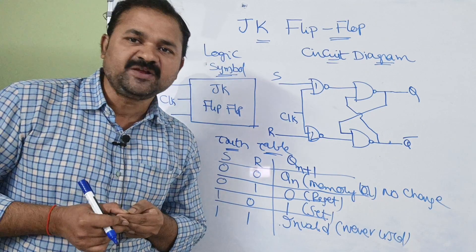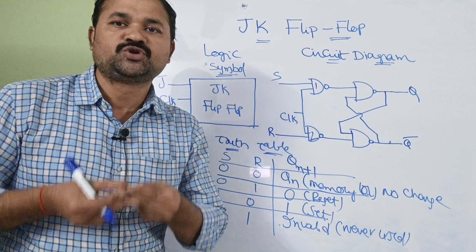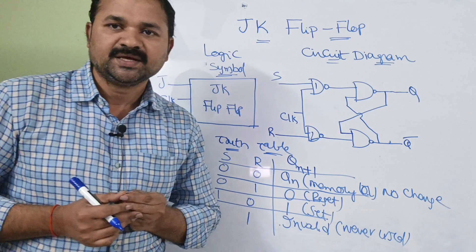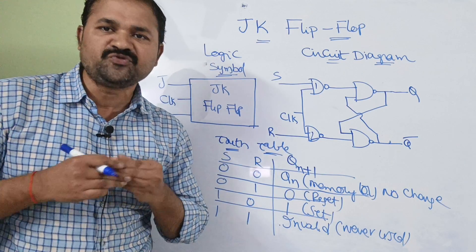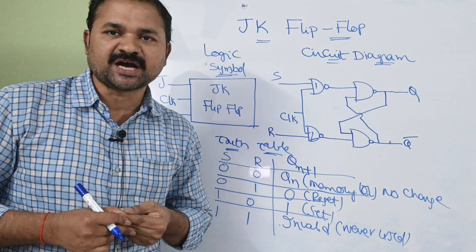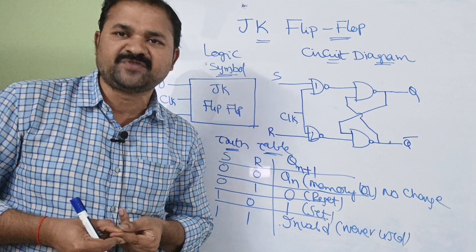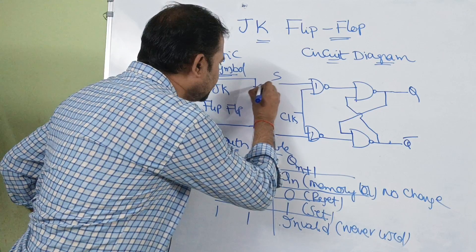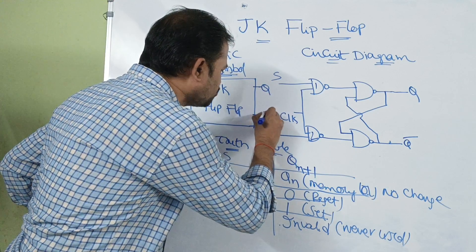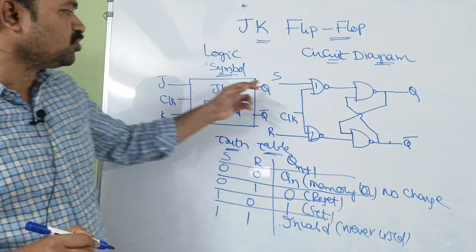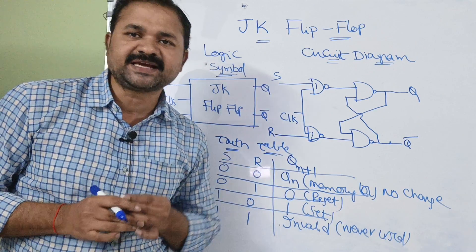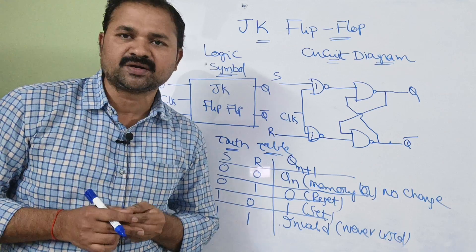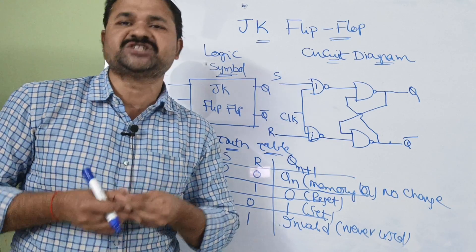JK flip-flop accepts two inputs such as J and K. It is a flip-flop, so we must apply clock pulse on the flip-flop. And we know that every flip-flop will produce two outputs. The first output is Q and the second output is Q bar. These two outputs are complemented to each other.